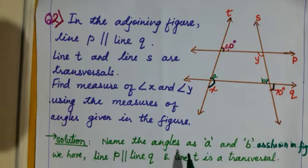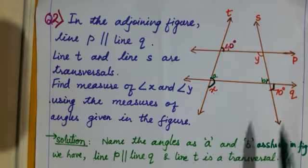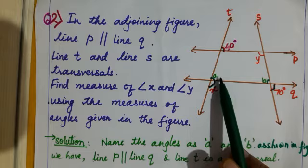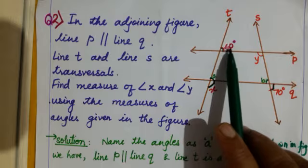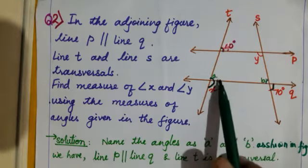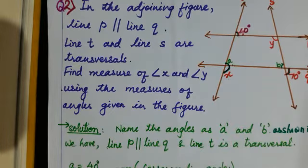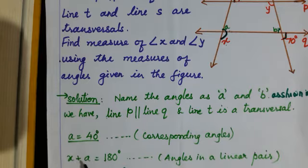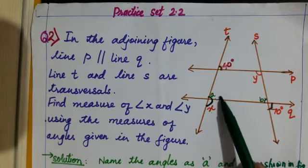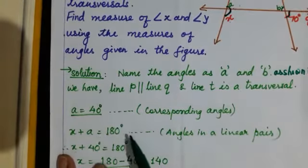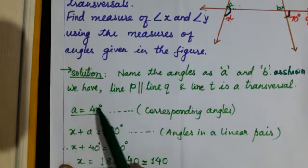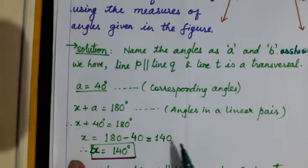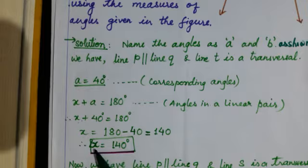Name two angles in the figure as a and b. Angle a and the given angle of 40° are corresponding angles, so a equals 40°. Now angles x and a form a linear pair, so x plus a equals 180°. Substituting a equals 40: x plus 40 equals 180, so x equals 180 minus 40, which is 140°.